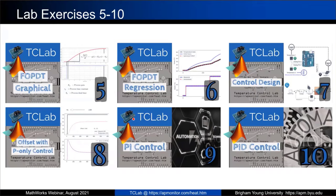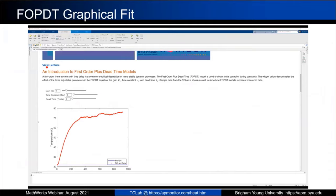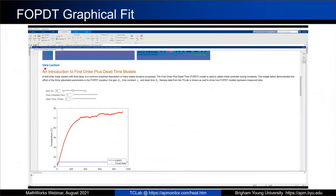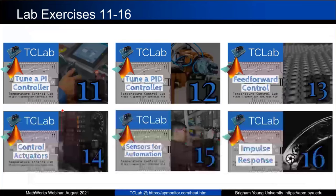We also have the FOPDT graphical fit module. Using live scripts, we give students interactive modules — for example, as they adjust a slider bar back and forth, the model changes. They've previously collected their data and want the FOPDT model to fit as best they can. They drag sliders to adjust gain, time constant, and dead time until they align best. Later we'll do regression to make that more precise. This gives students a more intuitive understanding of what's happening with these parameters.